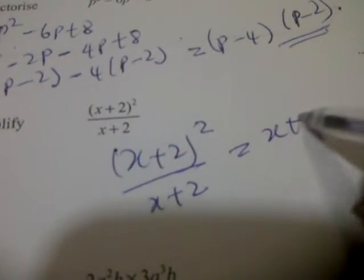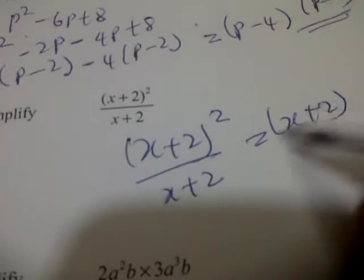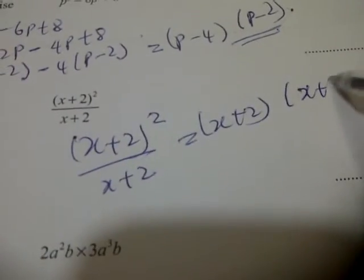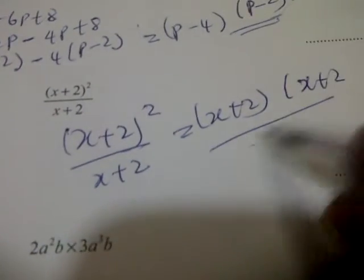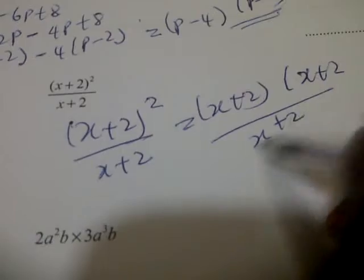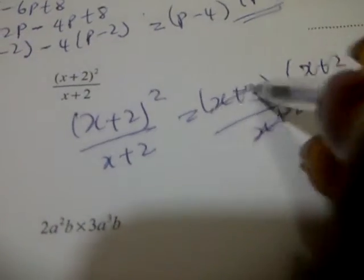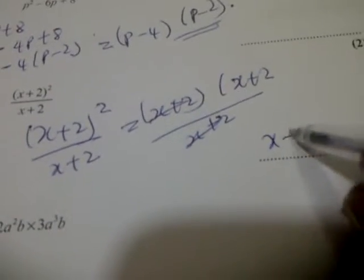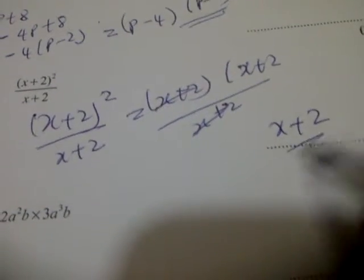Which is x plus 2 into x plus 2 over x plus 2. This cancels, so the answer is x plus 2.